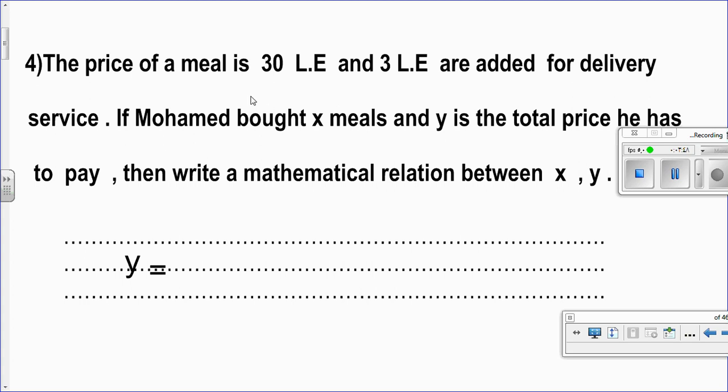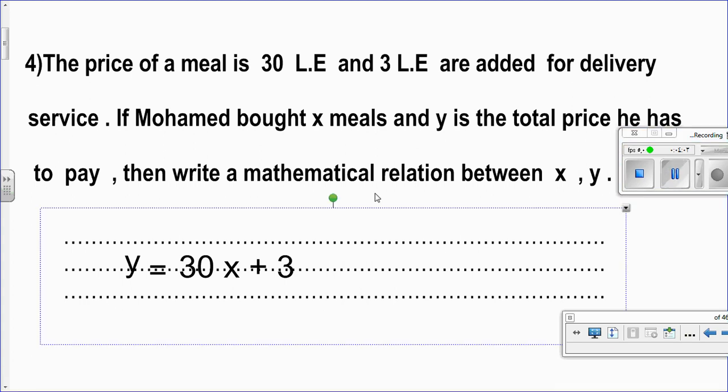Why 33? Its price is 30 but there is 3 pounds for the delivery service. So, you will make y equals 30x plus 3. The 30x for the meals and plus 3 for the delivery service.